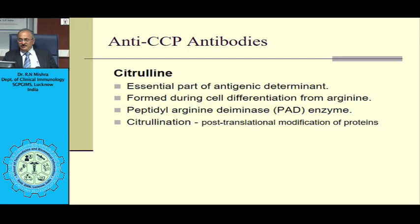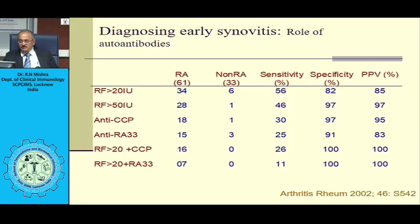This is a study where a cohort of 318 patients with undifferentiated arthritis were studied over time to assess the usefulness of anti-CCP for predicting development of rheumatoid arthritis. Of these, 127 ultimately developed RA. Of those who developed RA, only 25% who were CCP-negative developed RA, whereas 93% of those positive for antibody to CCP developed RA, giving an odds ratio of 37.8 with a 95% confidence interval of 13.8 to 111.